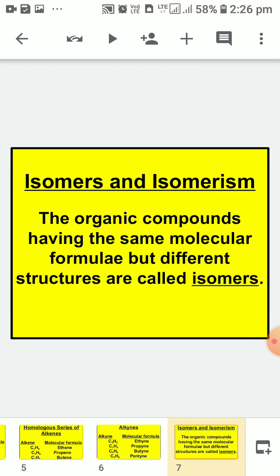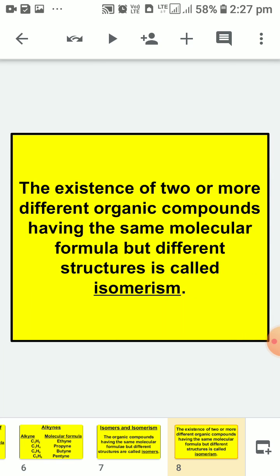The next topic is isomers and isomerism. Isomers are organic compounds which have the same molecular formula but different structures. The property of existence of two or more organic compounds having the same molecular formula but different structures is known as isomerism.